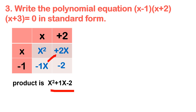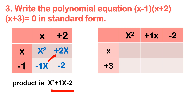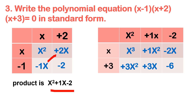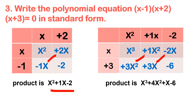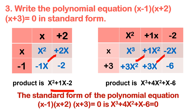Now multiply x squared plus x minus 2 by the remaining factor (x+3). x times x squared is x cubed, x times x is x squared, x times negative 2 is negative 2x, then 3 times x squared is 3x squared, 3 times x is 3x, and 3 times negative 2 is negative 6. Solving the diagonals: 3x squared plus x squared is 4x squared, and 3x minus 2x is x. The result is x cubed plus 4x squared plus x minus 6 equals 0.